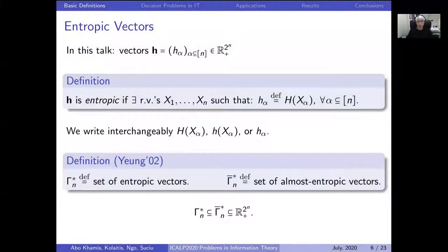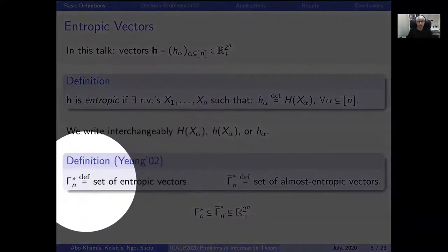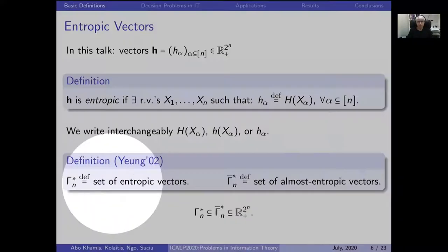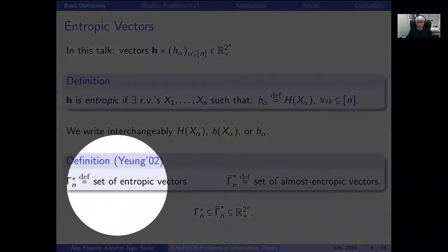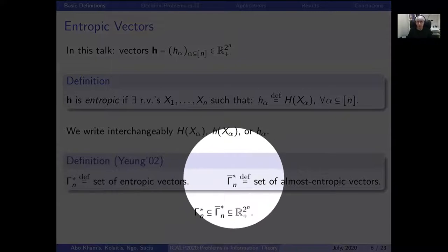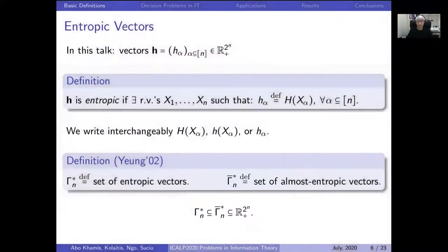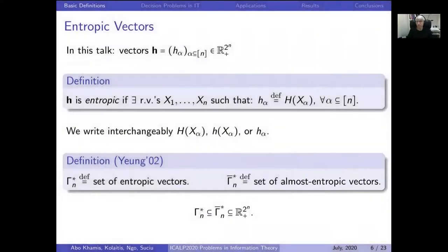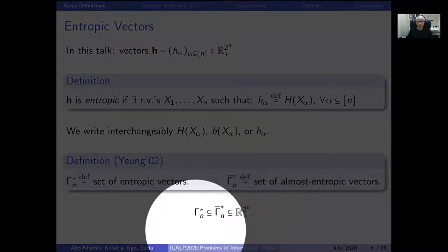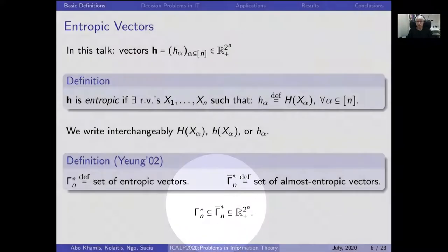The set of all entropic vectors is denoted Γ* — a notation introduced by Zhang and Yeung in the 90s. It is known that this set is not topologically closed and not convex. However, its topological closure, denoted with a bar over Γ*, is known to be convex. It is much better behaved, and the vectors inside this set are called almost entropic vectors — they are limits of sequences of entropic vectors. It is known that for n ≥ 3, the set of entropic vectors is strictly included in the set of almost entropic vectors.